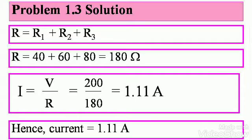From Ohm's law, you know that I equals V by R, which is 200 divided by 180, which gives you 1.11 amps. Hence, the current is 1.11 amps and this is your answer.